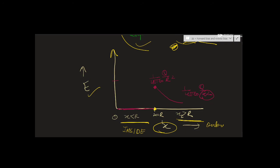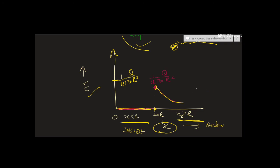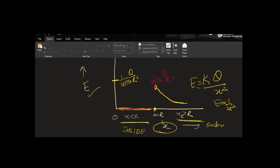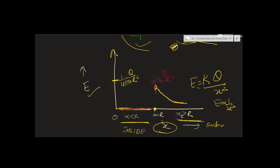Inside, electric field is 0, shown as a flat yellow line along the axis up to R. At x = R, the field reaches its maximum value: E = (1/4πε₀)·q/R². Outside, E = kq/x², which is inversely proportional to distance squared, so the graph falls off as a curve. You can connect the inside and outside portions with a dotted line. This E versus distance graph is very important for this topic.